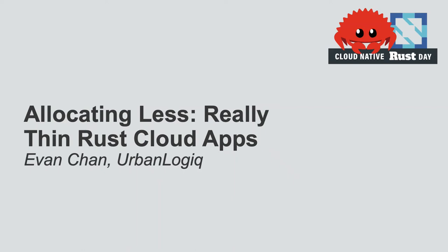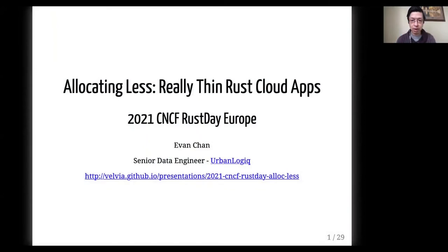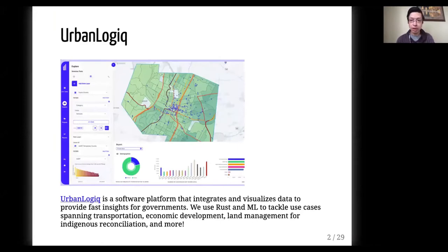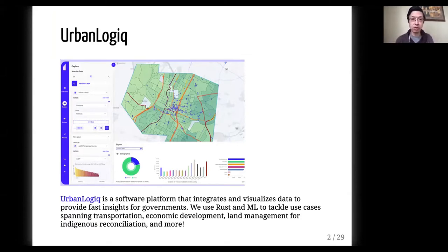Hi everyone, my name is Evan Chan. I'm a senior data engineer at Urban Logic, and welcome to my presentation. Urban Logic is an online platform that provides insights, and we use Rust and machine learning amongst other things to give really great insights for transportation, economic development, and other community use cases.